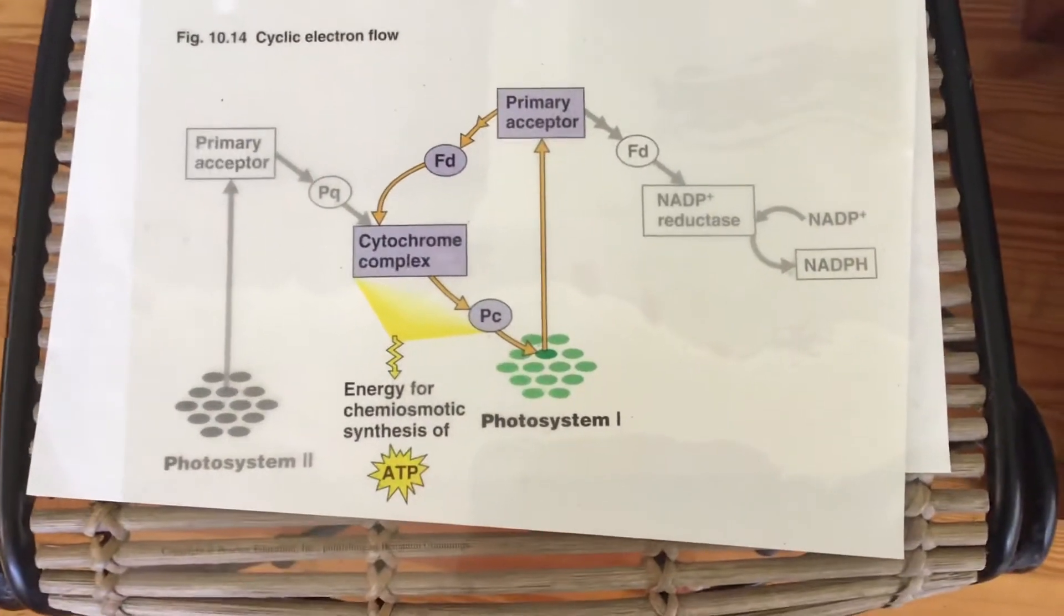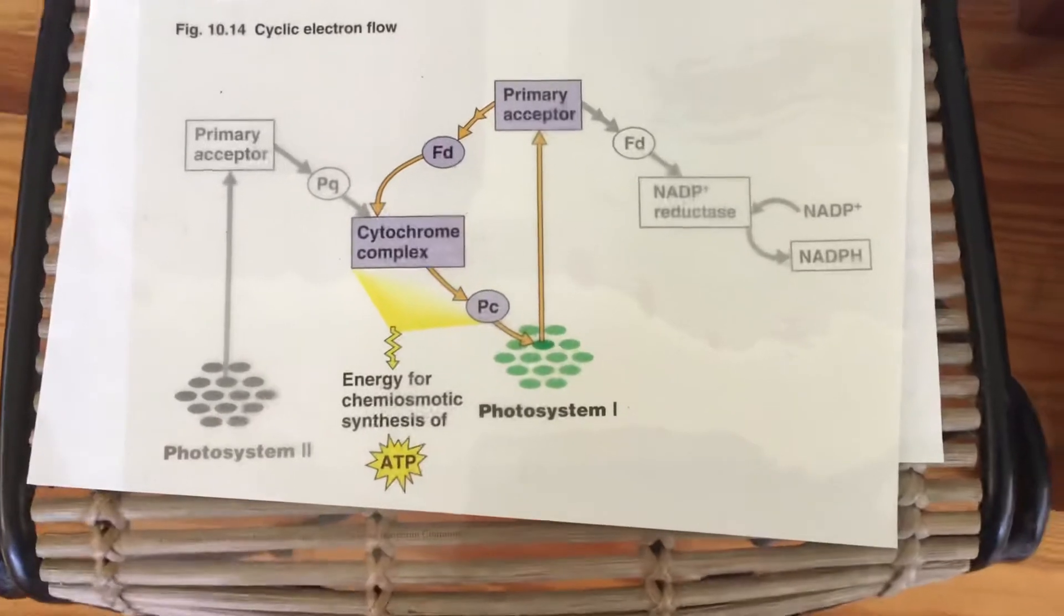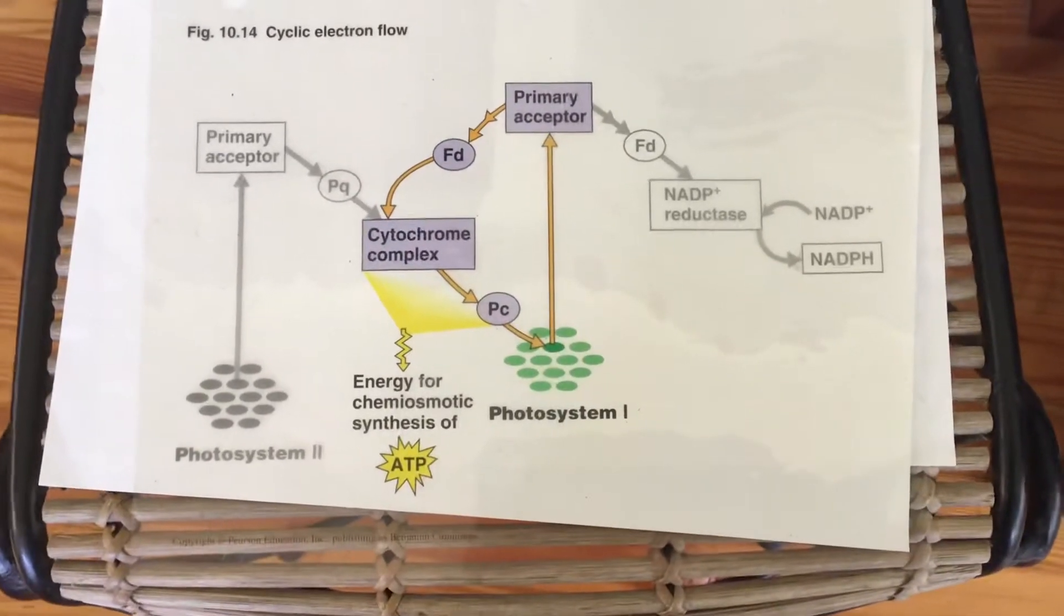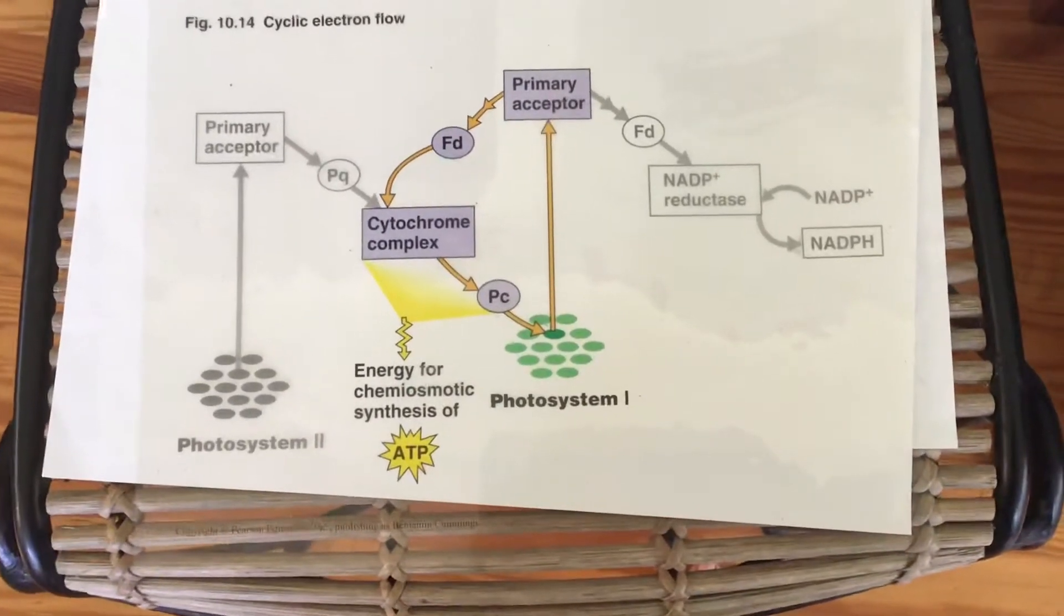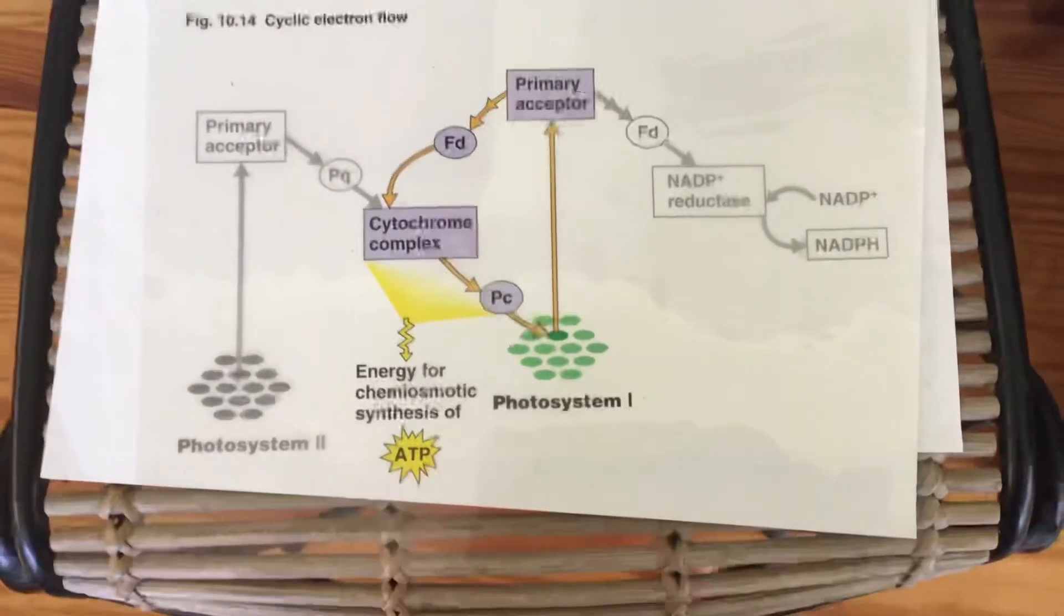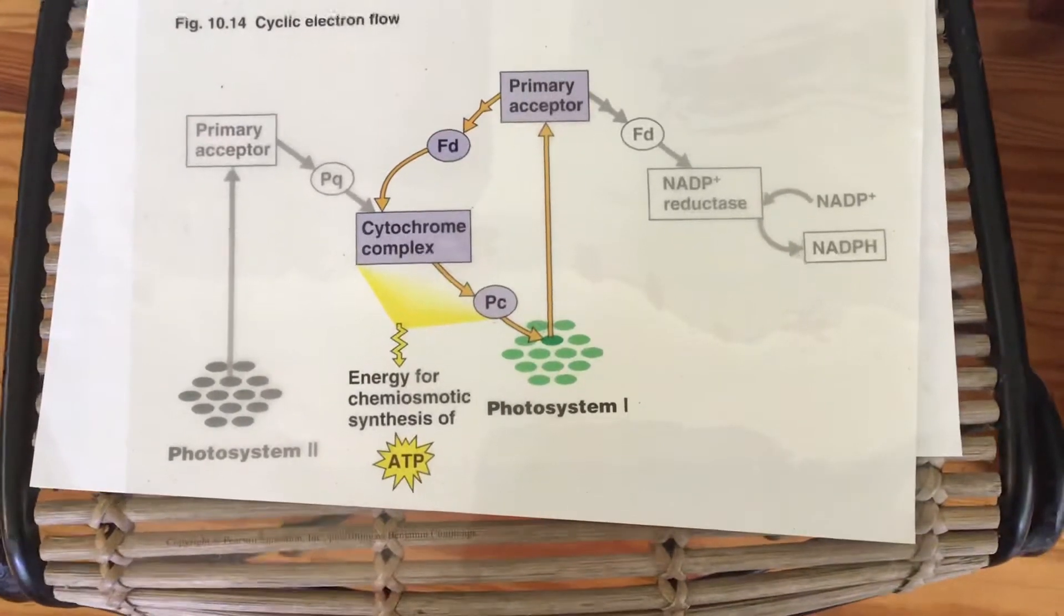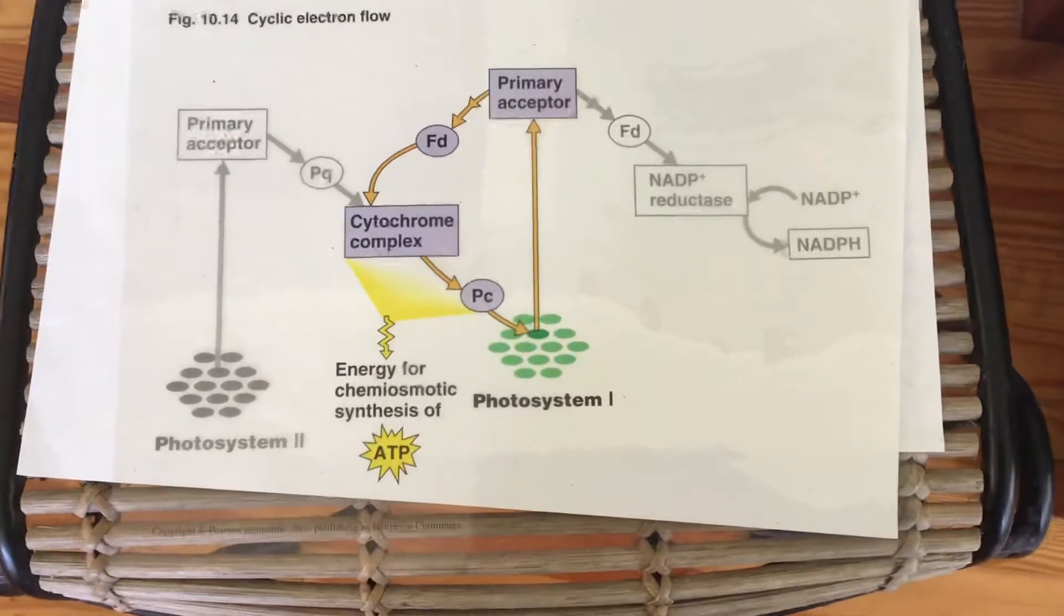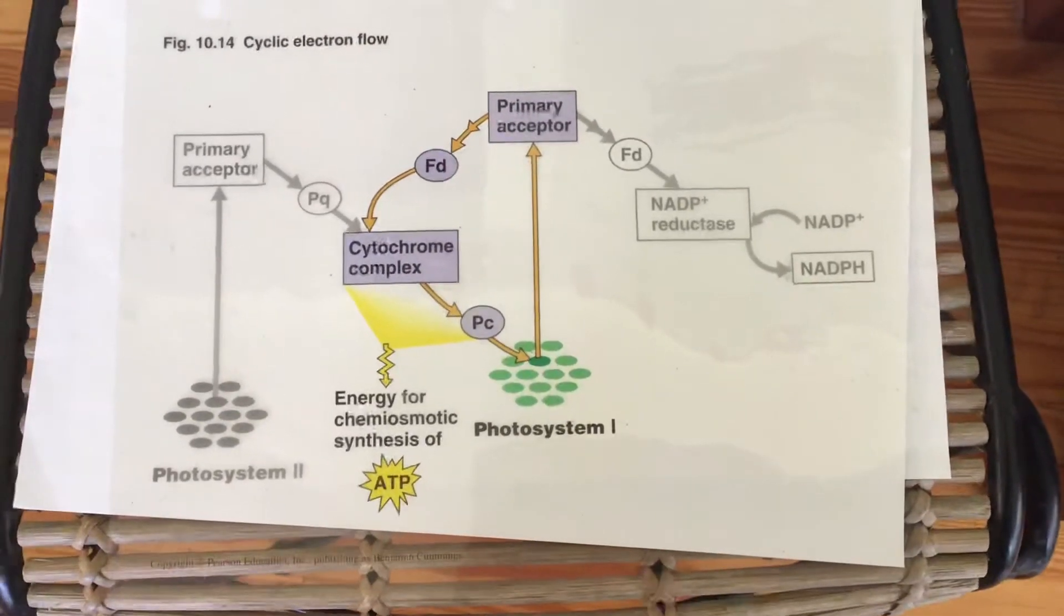We're going to talk about cyclic electron flow. So as implied before, the non-cyclic electron flow where the electron went through at one time, we said that it yielded the same amount of ATP and NADPH. Well, it turns out for the next part, that is part two, where we're using the energy of ATP and NADPH to make sugars, that we need more ATP than we do NADPH.